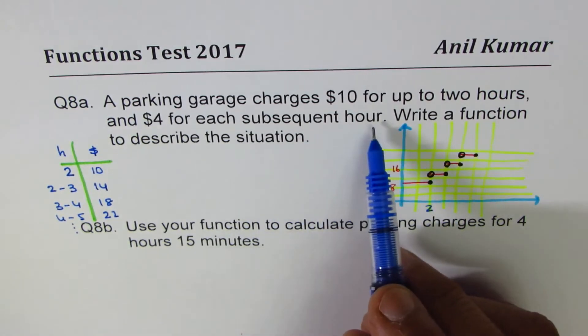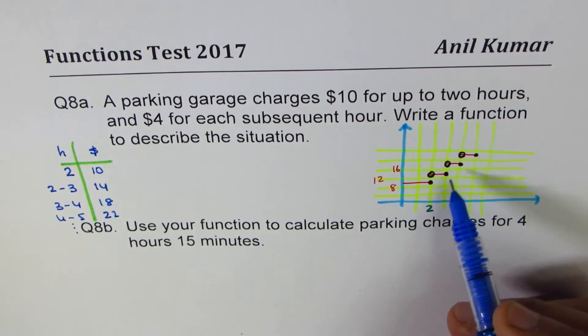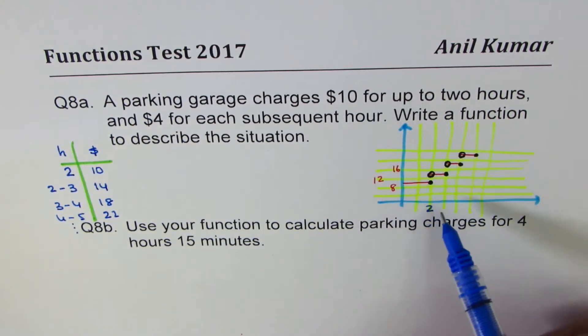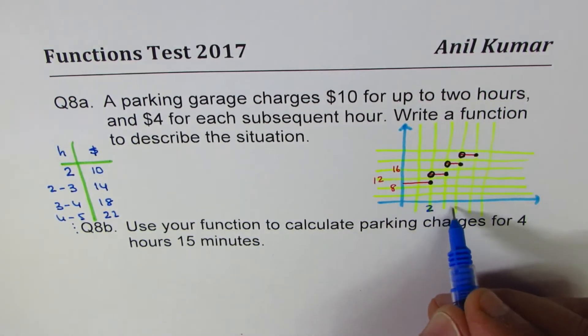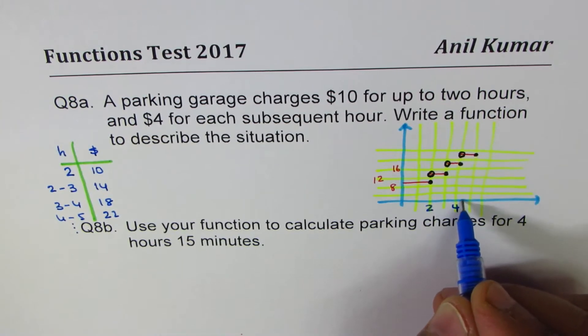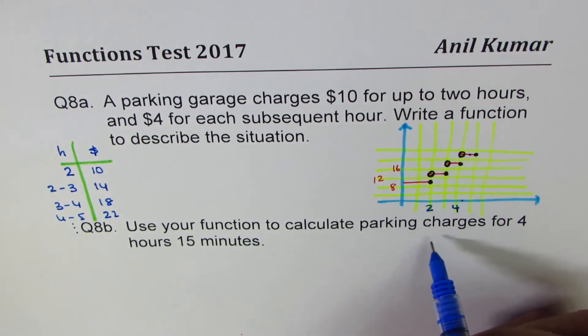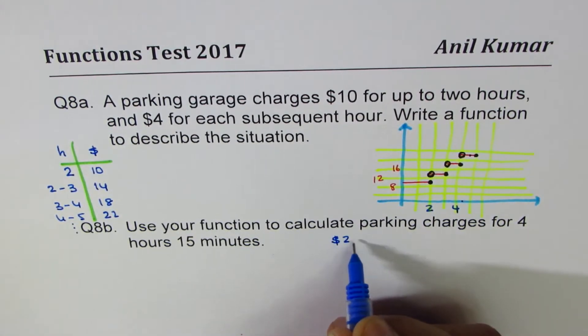So each subsequent hour will be charged like this. So that becomes the graph to explain the concept. Now, let's get back to part B first. It says, use your function to calculate parking charges for four hours 15 minutes. So if the time is four hours and slightly more, then that is the charge. So more than four hours, $22. So the cost is $22.